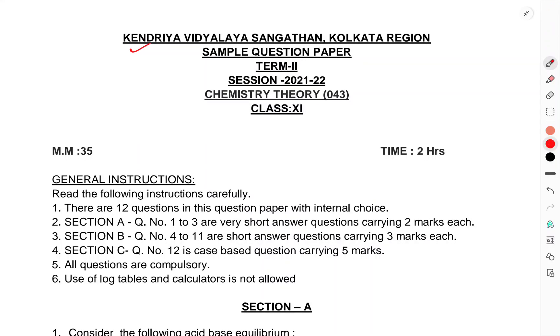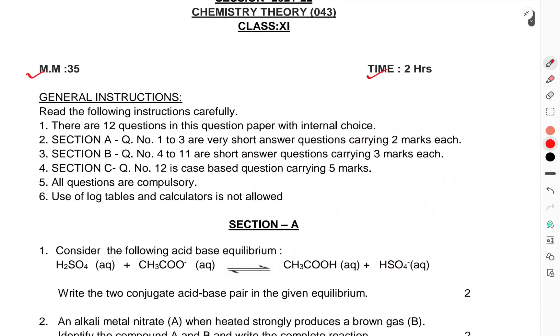Today we have to discuss the sample question paper term 2 for Chemistry Theory 043 class 11th. Maximum marks 35, time 2 hours, general instructions.